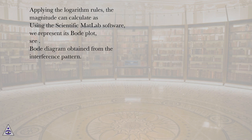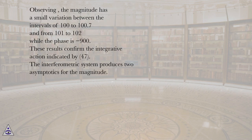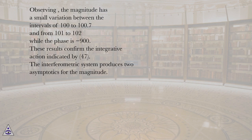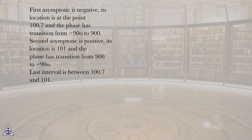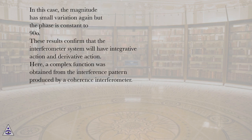Using MATLAB software, we represent the Bode plot (C). The Bode diagram is obtained from the interference pattern. Observing the diagram, the magnitude has a small variation between the intervals of 10^0 to 10^0.7 and from 10^1 to 10^2, while the phase is −90°. These results confirm the integrative action indicated by equation 47. The interferometric system produces two asymptotes for the magnitude: the first asymptote is negative, located at 10^0.7, where the phase transitions from −90° to −90°; the second asymptote is positive, located at 10^1, where the phase transitions from 90° to −90°. The last interval is between 10^0.7 and 10^1, where the magnitude has small variation again but the phase is constant at 90°. These results confirm that the interferometer system will have both integrative action and derivative action.